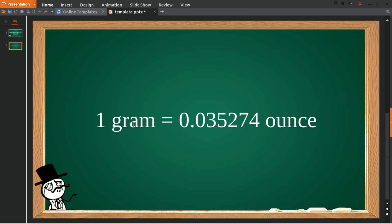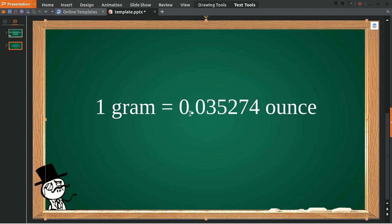One gram is equal to 0.035274 ounce. Quite a long number, but that's a precise answer to your question.